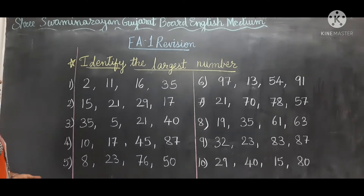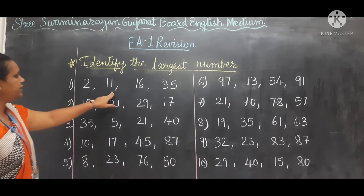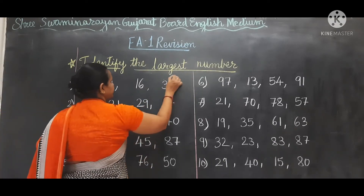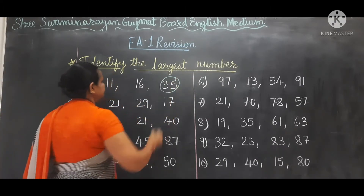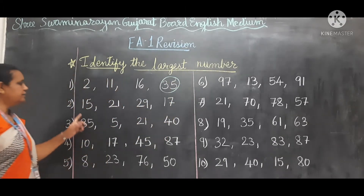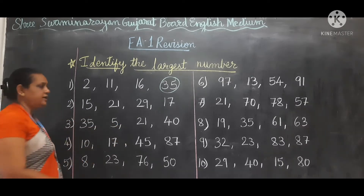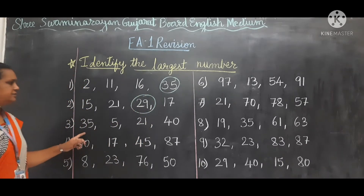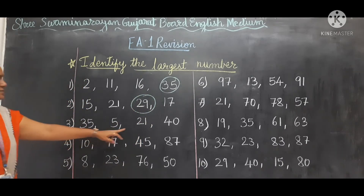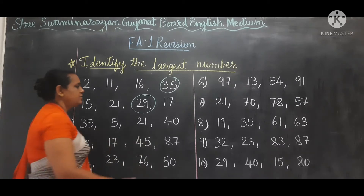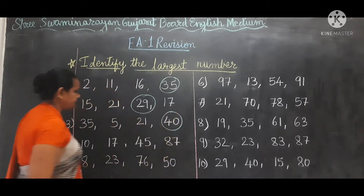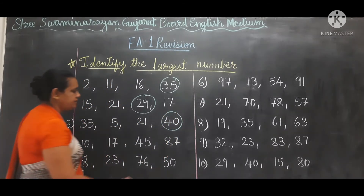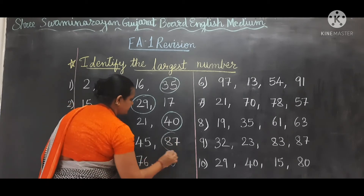Okay, now which is the largest number? 2, 11, 16, or 35 — the answer is 35. Next: 29 is the largest number. Next, which one is the largest? 40. Here: 87.